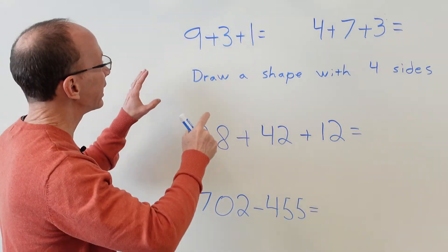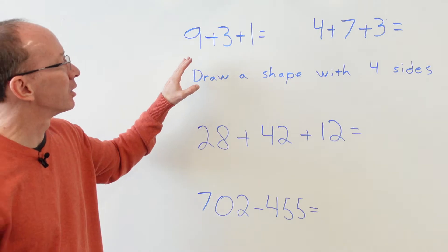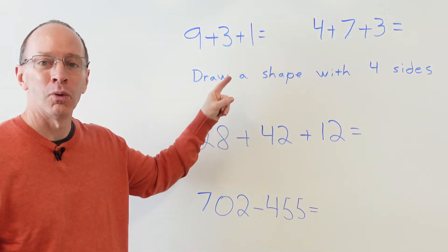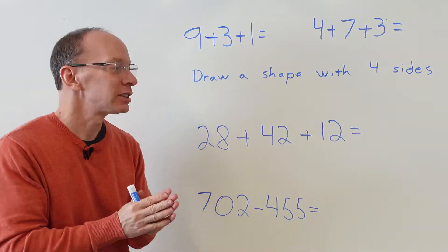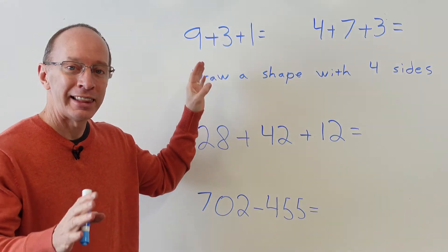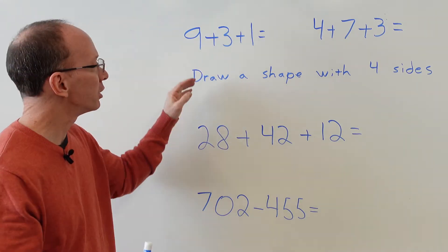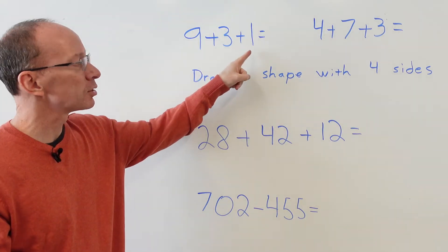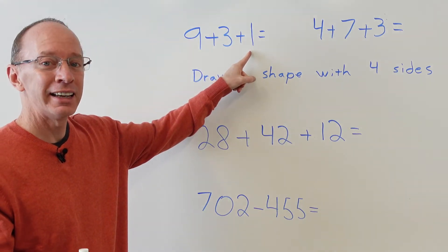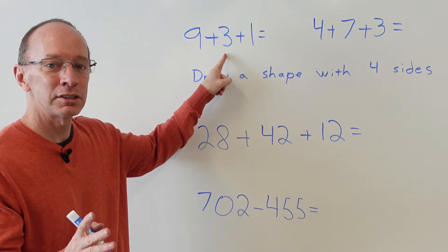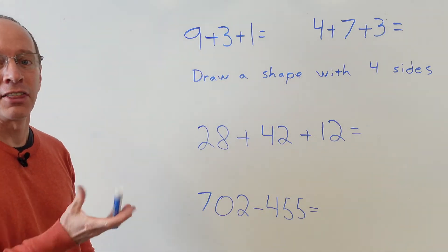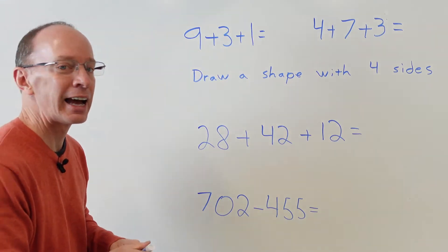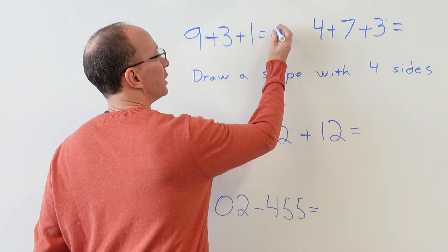Let's take a look at our first problem here. We have 9+3+1. What I like to do is I like to look for numbers that equal ten. Do you see two numbers that might equal ten? That's right, the 9 plus the 1 would equal 10, and then 10+3 equals, you got it, 13.